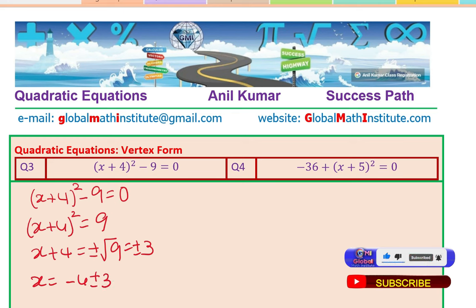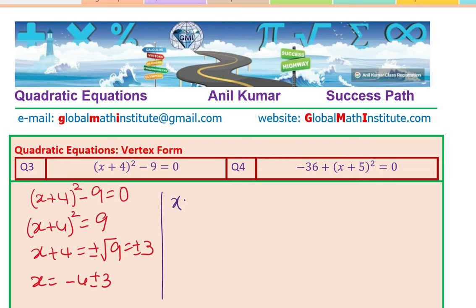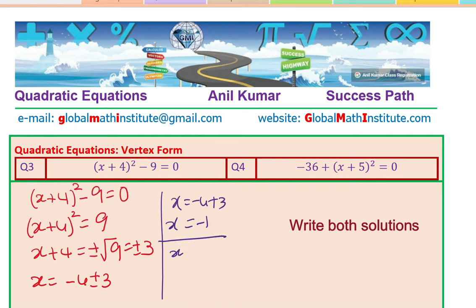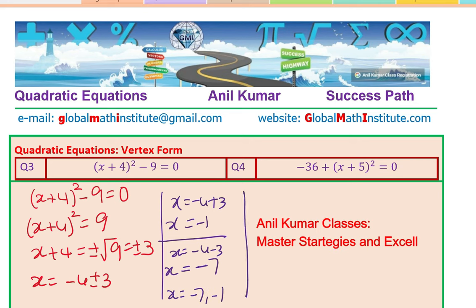When we write x equals minus 4 plus or minus 3, it means either we take plus or minus. So x equals minus 4 plus 3, which is minus 1, or x equals minus 4 minus 3, which is minus 7. We have two answers: x equals minus 7 or minus 1.